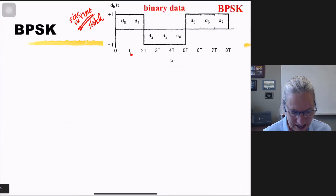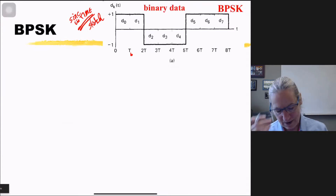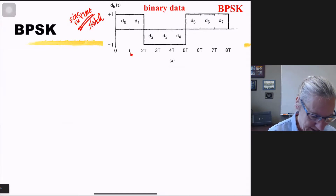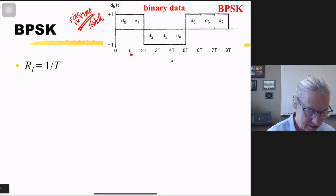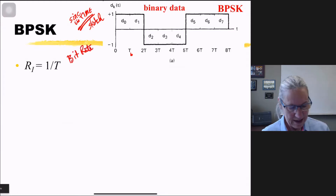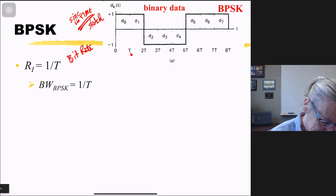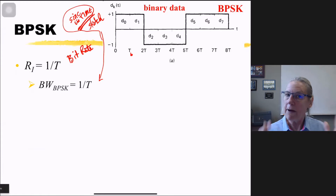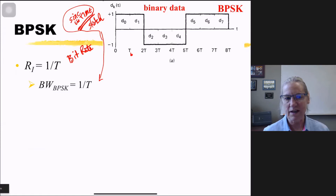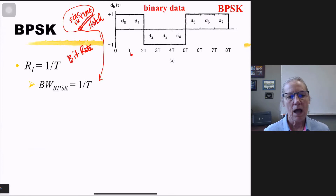Suppose we have binary data and during the time of a single bit we send data bits d0, d1, etc. The data rate, or bit rate, is 1/T. The occupied bandwidth — assuming a sinc in the time domain — means the minimum possible occupied bandwidth for this data rate is also 1/T. This is BPSK.